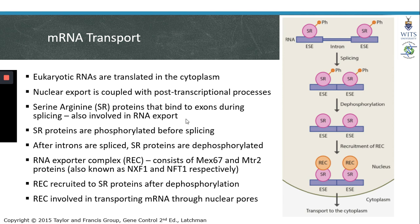Serine-arginine proteins are phosphorylated before introns are spliced out. Once exons have been bound to each other at the correct position, these SR proteins are dephosphorylated. Dephosphorylation of the SR proteins leads to recruitment of the RNA exporter complex, or REC.